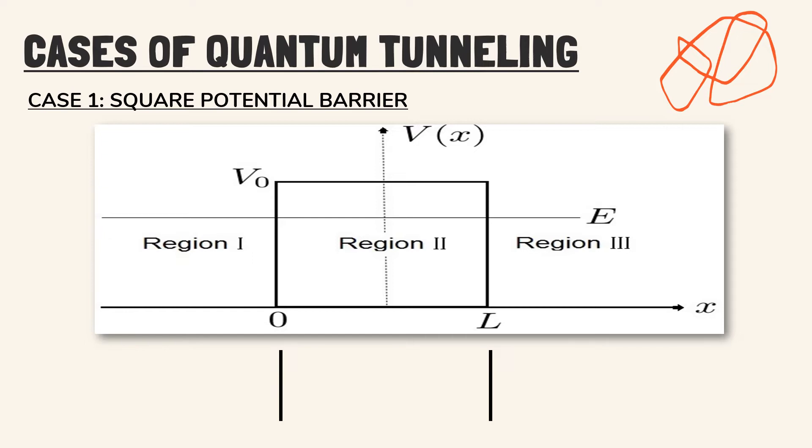This is the region where the incident wave and reflected waves pass. In region 2, x is equal to L and v is v0, which is the maximum value of potential energy. Here, the transmission occurs.